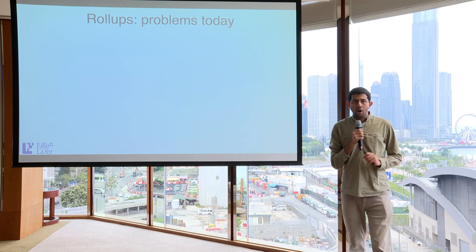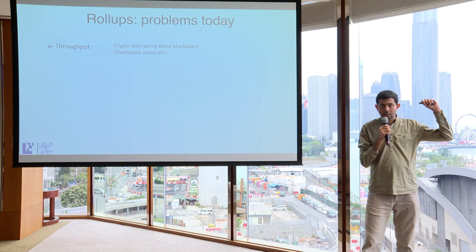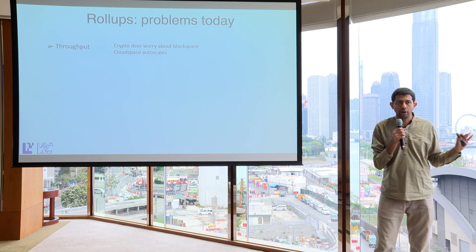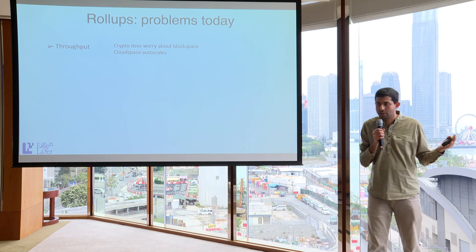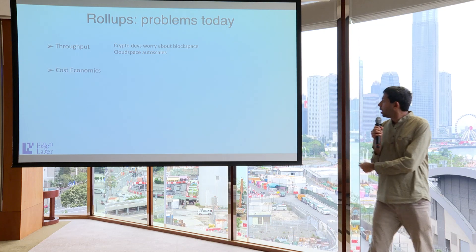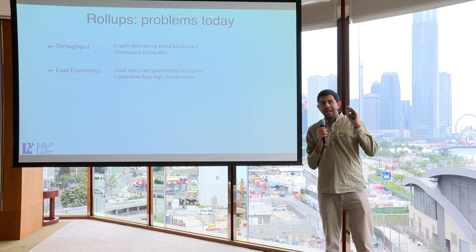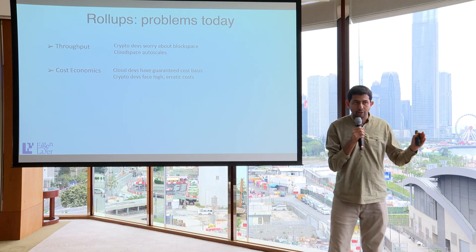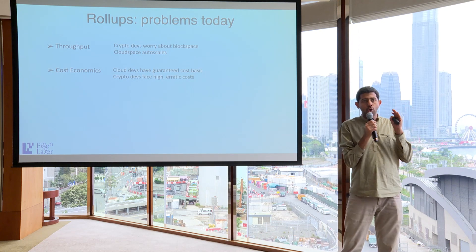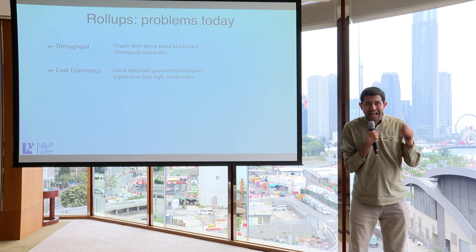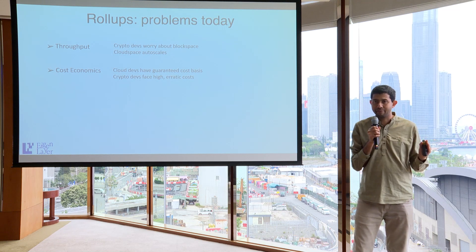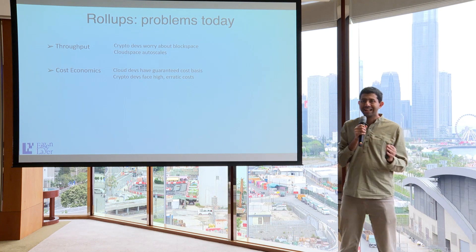But to build a rollup today is not all fun and games — there are a whole bunch of problems. The first one is throughput. Crypto devs worry a lot about block space. If you're a cloud developer, you never worry about cloud space, because cloud stretches as much as there is demand for it. On cost economics, Amazon Web Services will quote you a reserved price for running a server — guaranteed cost basis. But crypto devs face high, erratic costs. Yugalabs does a board drop and you're drowned in somebody else's traffic congestion — high costs that you face as an externality of others.